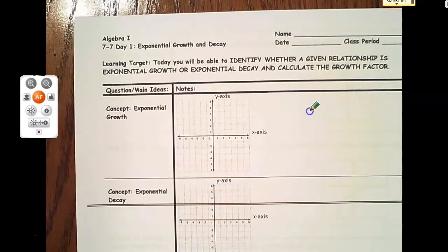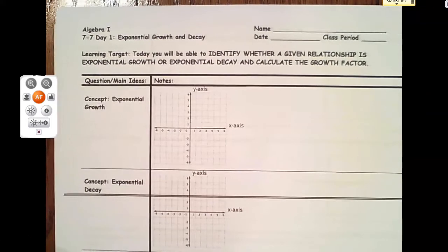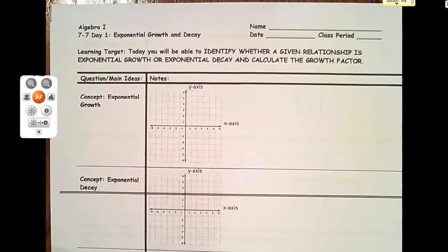Good morning students. Today we're going to look at Objective 7-7 or Lesson 7 in Module 5 called Exponential Growth and Decay.